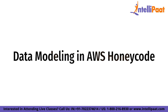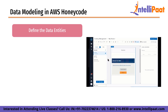Now we'll look at data modeling in AWS Honeycode. Data modeling is a critical aspect of building an application in Honeycode. A data model is a visual representation of how data is organized and how it relates to each other. The data model defines the structure of the app's data, including tables, columns, and relationships. Here are the key steps involved in data modeling in Honeycode.